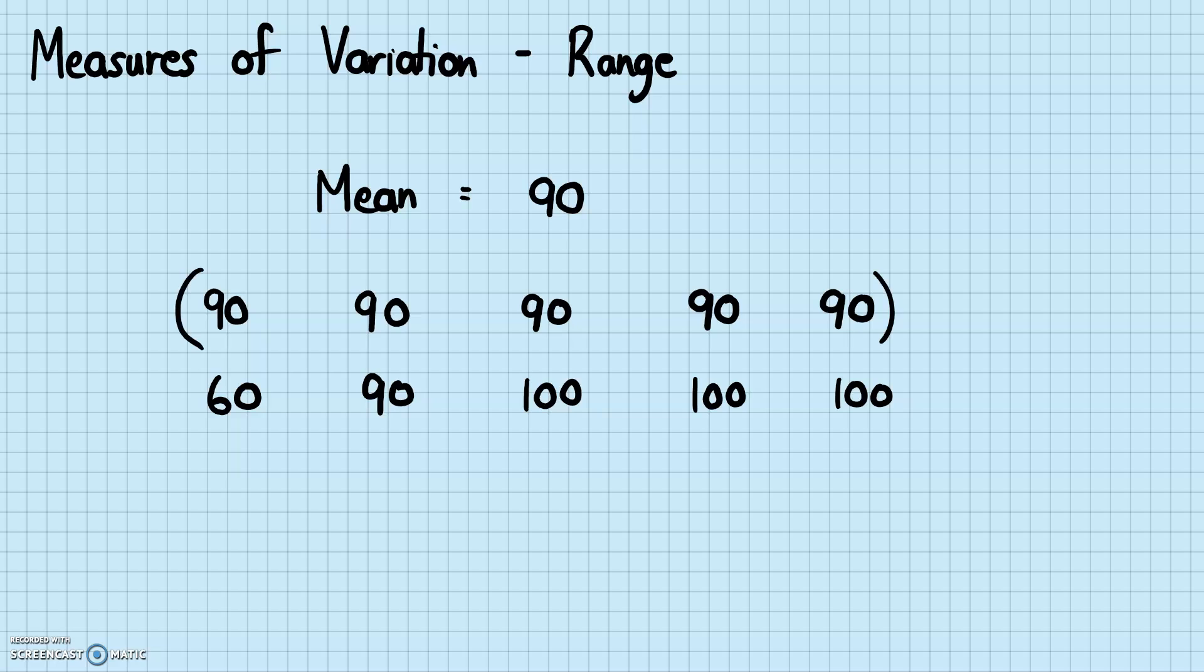Now these two data sets are clearly different. On one case, we have a student who got all 90s. On the other case, students got a really bad score at first, but then made up for that score later on with 100s. But both of these data sets give you the same mean. They're both 90.